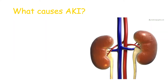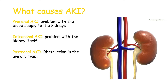So what causes AKI? There are three categories. Pre-renal AKI — pre-renal means before the kidneys, and what comes before the kidneys are the renal arteries, so the blood supply. Anything that disrupts blood flow to the kidneys would be a pre-renal cause. Intra-renal AKI would be a problem with the kidney itself. And what comes after the kidneys is the ureter, so any obstruction in the urinary tract would lead to post-renal AKI.